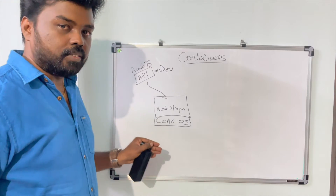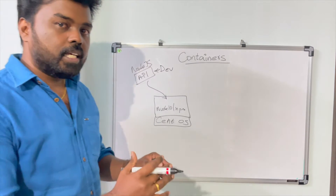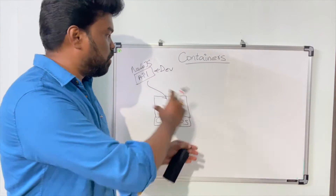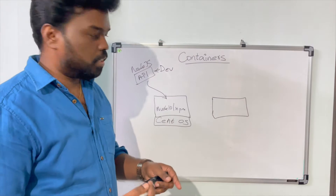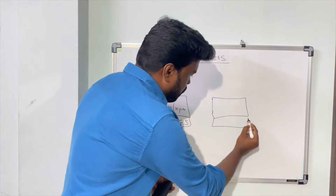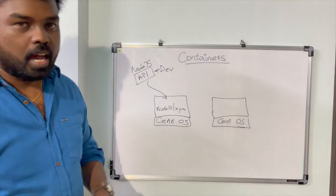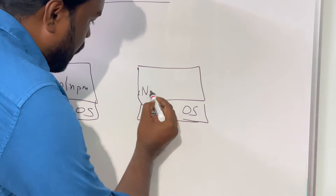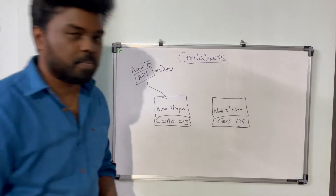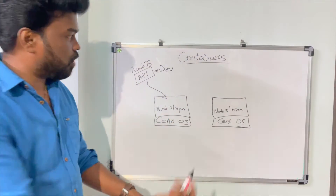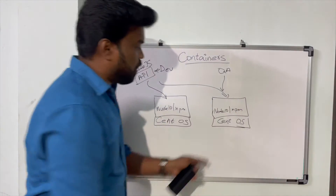Now we have to release this application to the testing team so that they can do their testing activities. The testing team has to create a similar environment to run the application. They get a server and have to install the same operating system. Similarly, they have to install the same runtime — Node 10 in our case — and they also have to install all the NPM dependencies. Once everything is up and running, the testing team can deploy the application into their server.